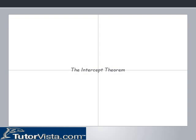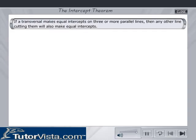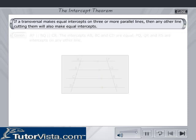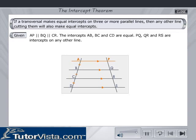The Intercept Theorem states that if a transversal makes equal intercepts on three or more parallel lines, then any other line cutting them will also make equal intercepts. Given AP is parallel to BQ is parallel to CR.